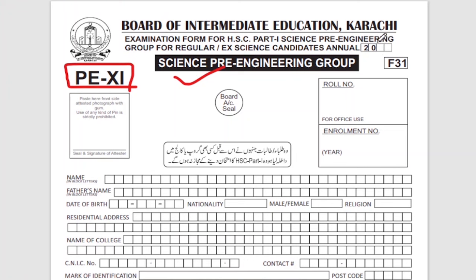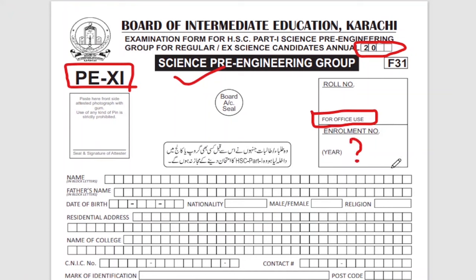First, we will fill this form. You will put the annual year. After that, you will fill your roll number. This section is already marked 'for office use,' which will be filled by your board or college. If your enrollment number is not available, ask your college — they will help you fill it in your form.